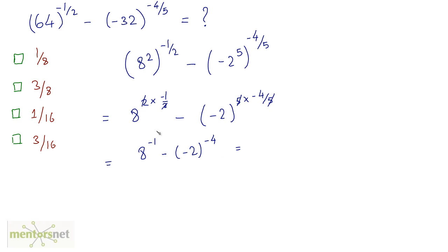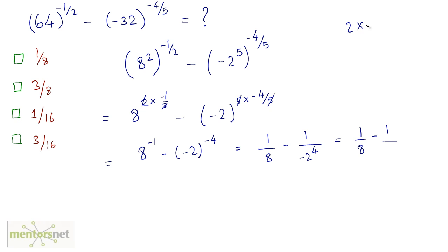So this equals 8 raised to power minus 1, which is 1 by 8, minus minus 2 raised to power minus 4, which is 1 upon minus 2 raised to power 4. So this equals 1 by 8 minus 1 by 2 raised to power 4. Let us calculate: 2 times 2 times 2 times 2 is 4 times 4, which is 16.